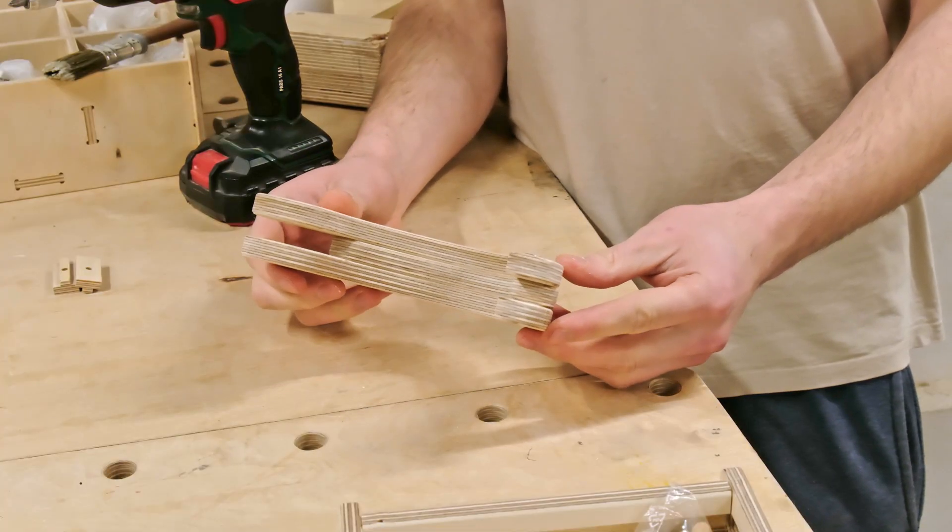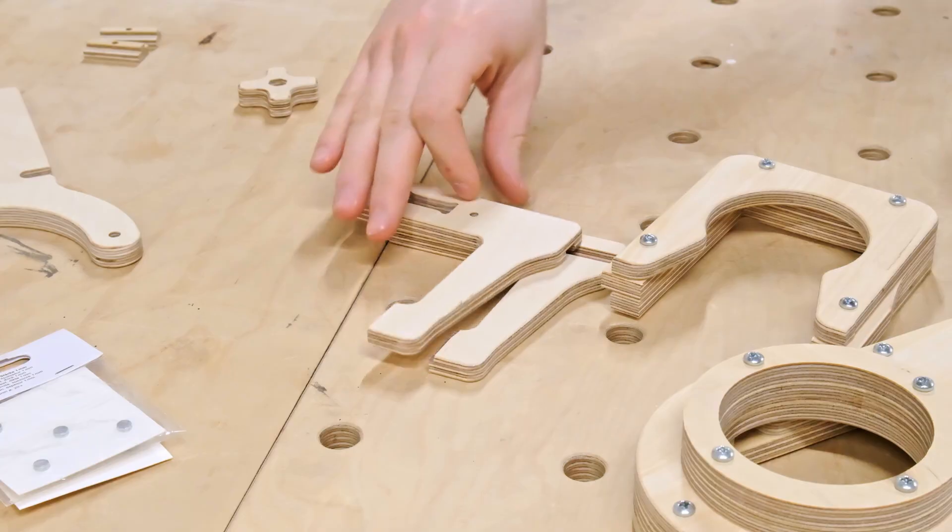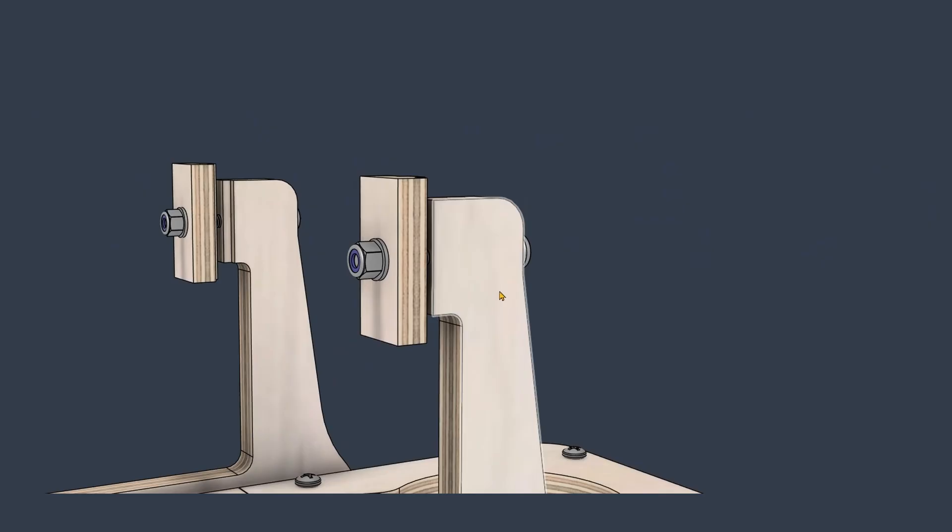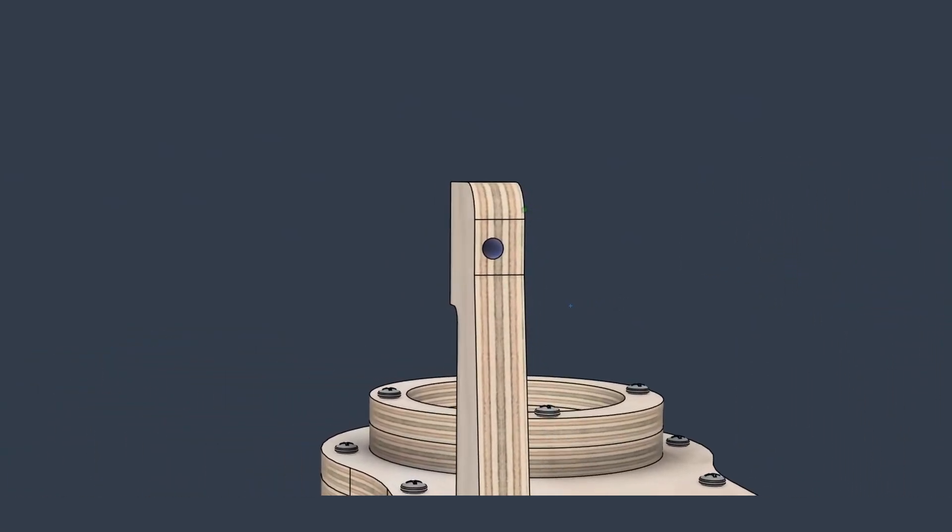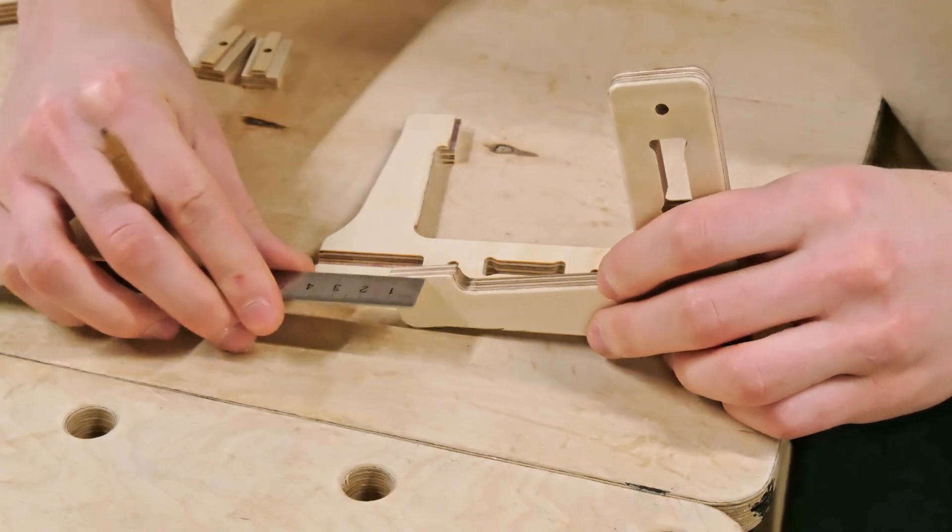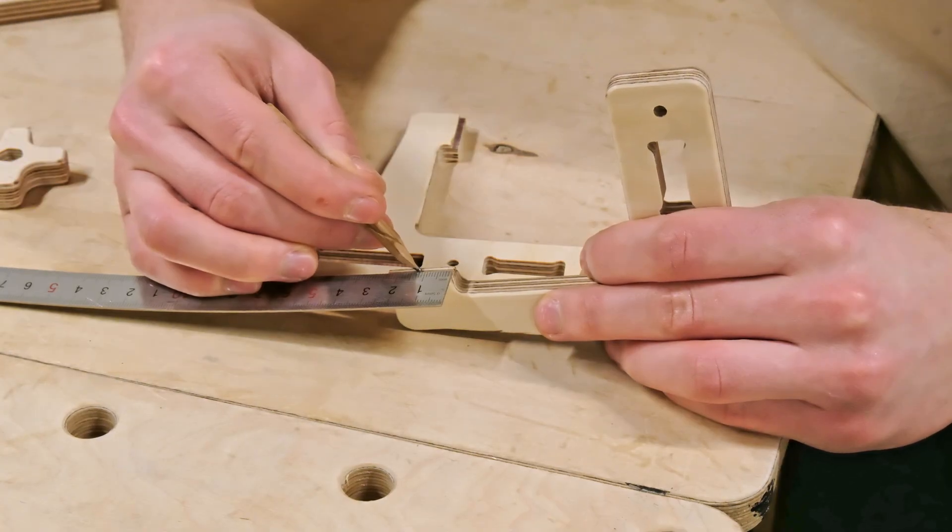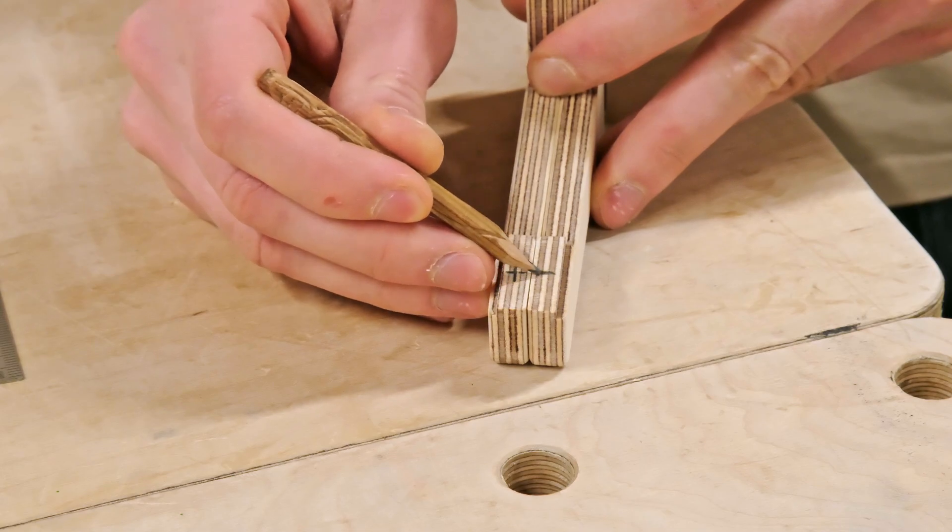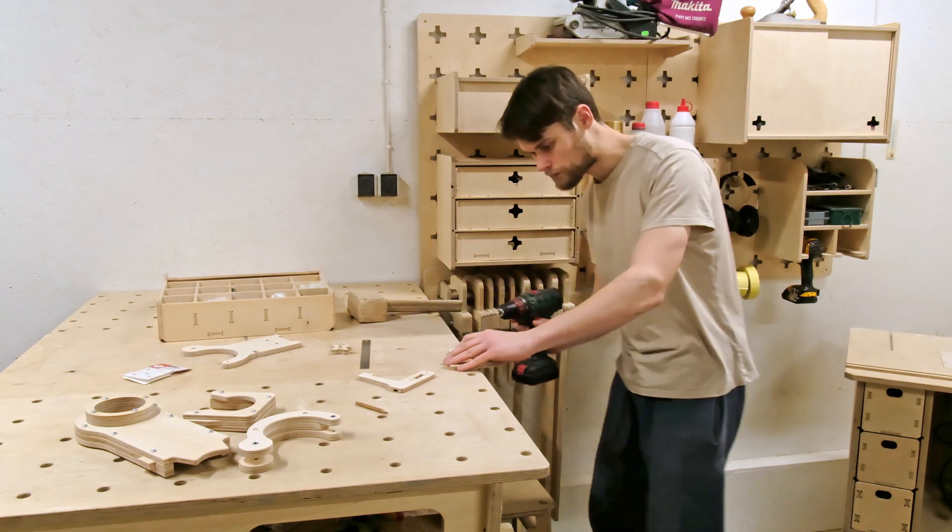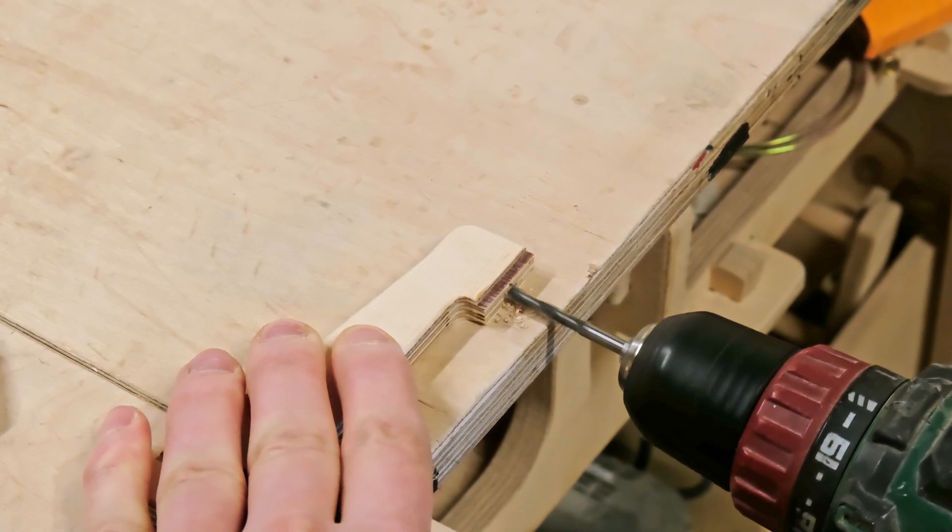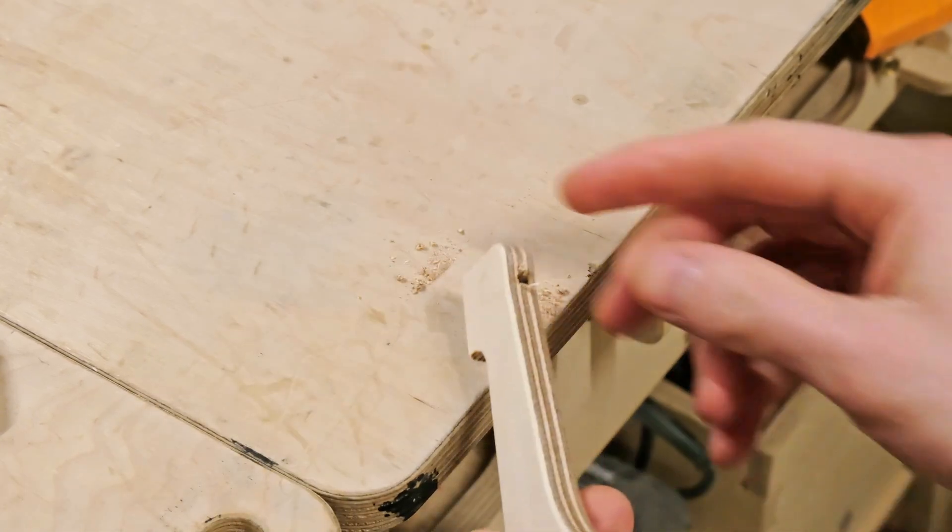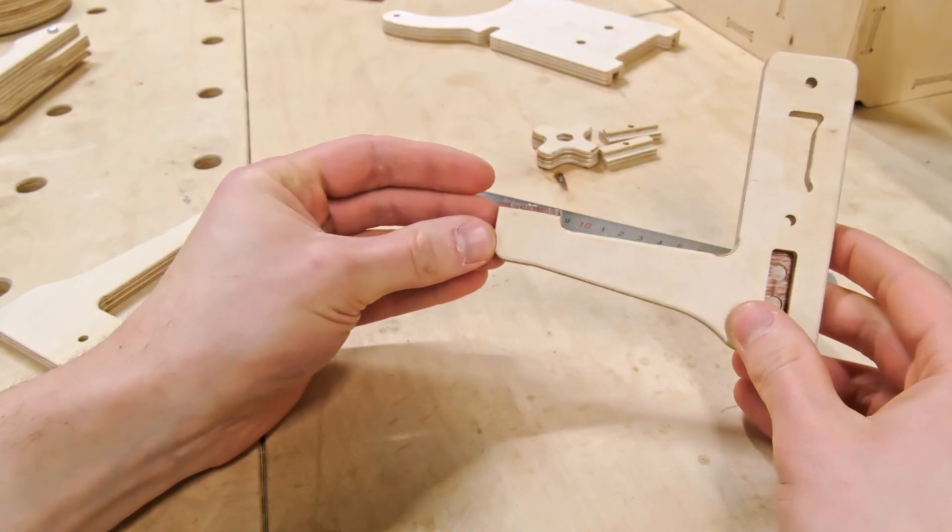While we are waiting for the glue to set, we can start working on the mounting components. We need to drill a hole through the parts that will help us secure the dust shoe to the CNC router. So the first step is to carefully mark the center of the tenon that joins the parts to the CNC's mounting bracket. Then we can take a 4mm drill and carefully drill the hole going straight through the part.